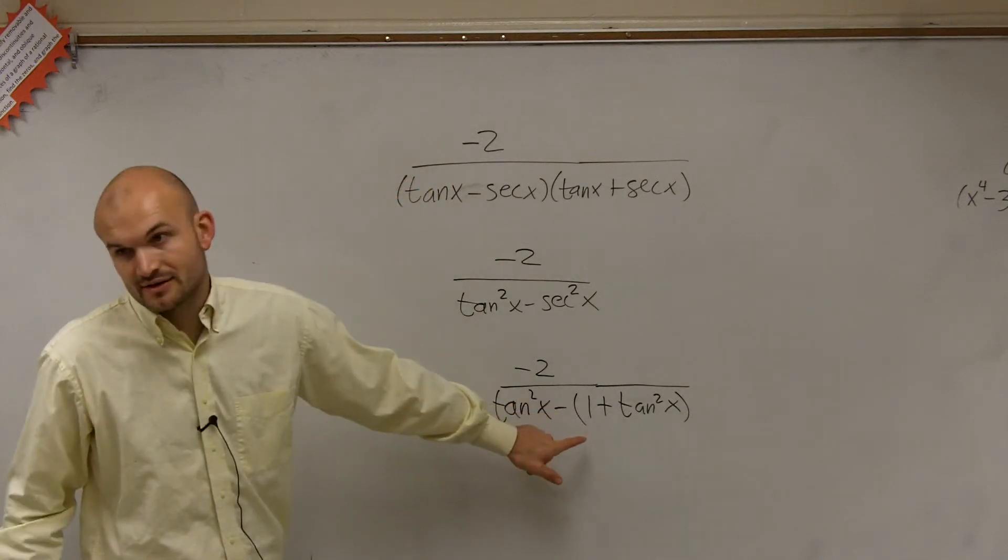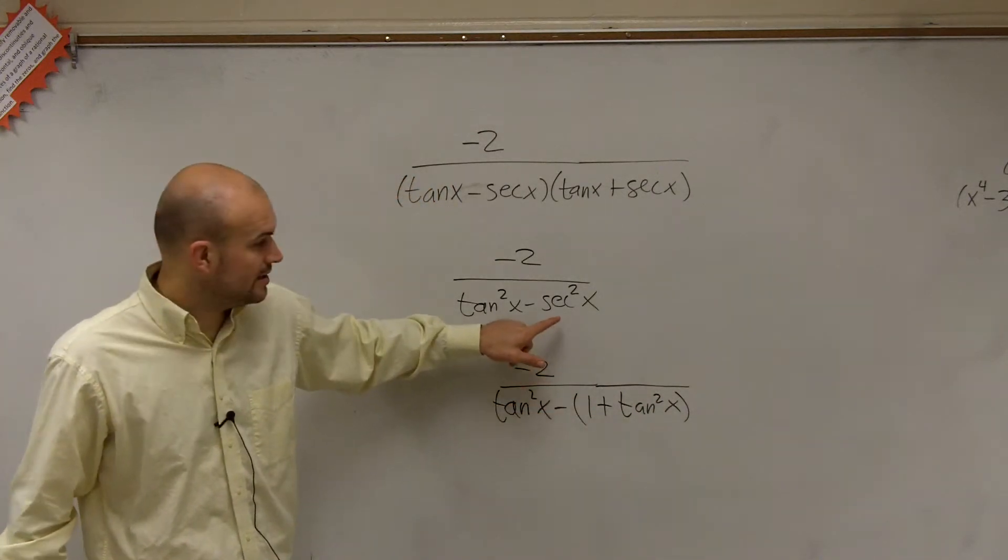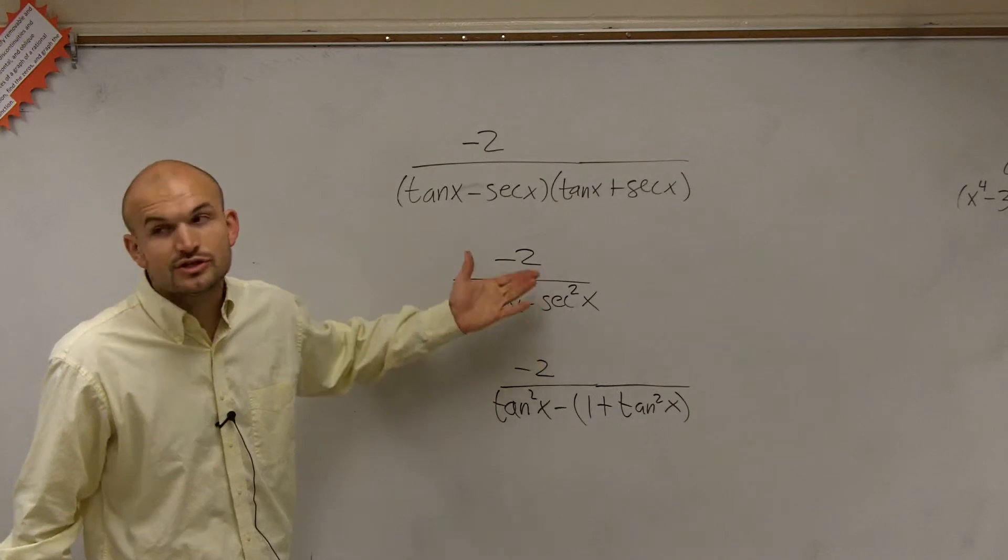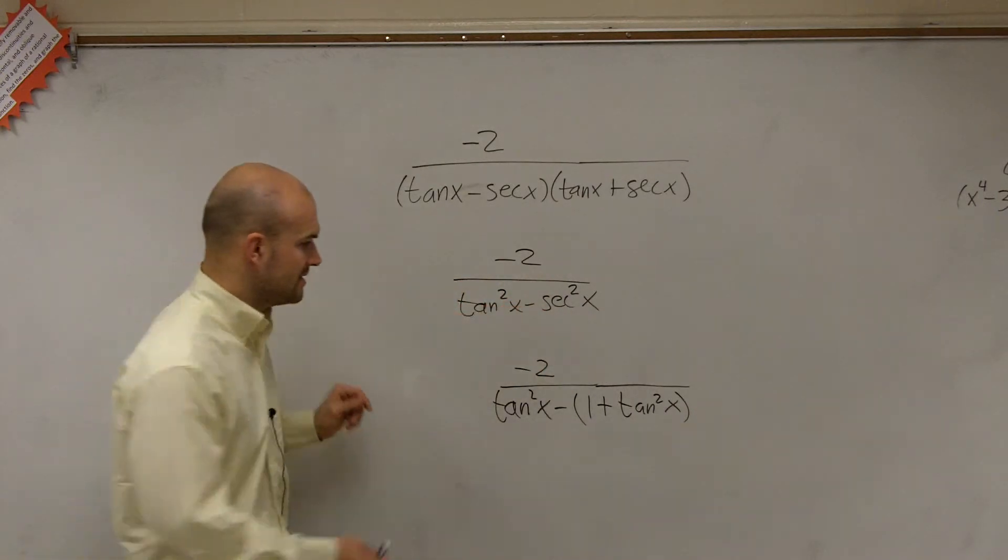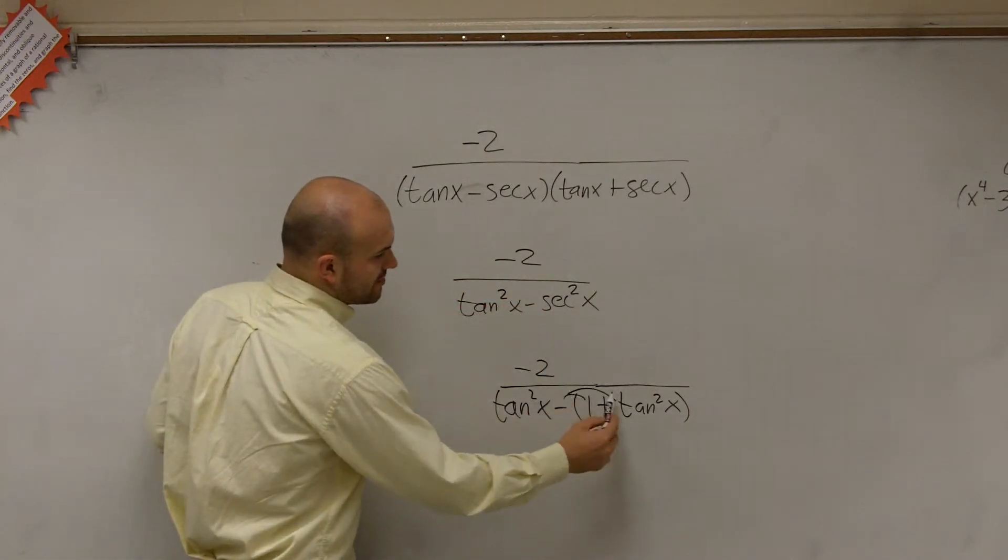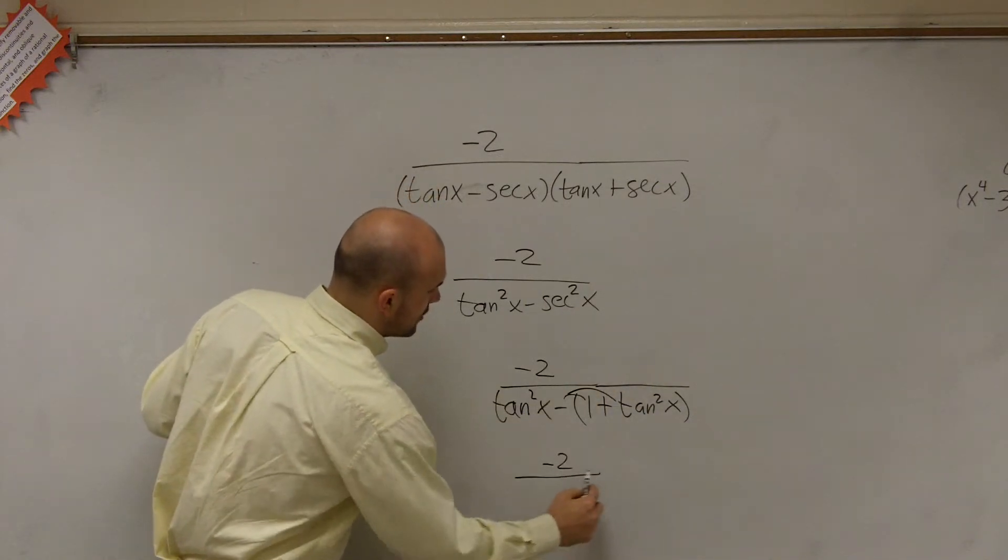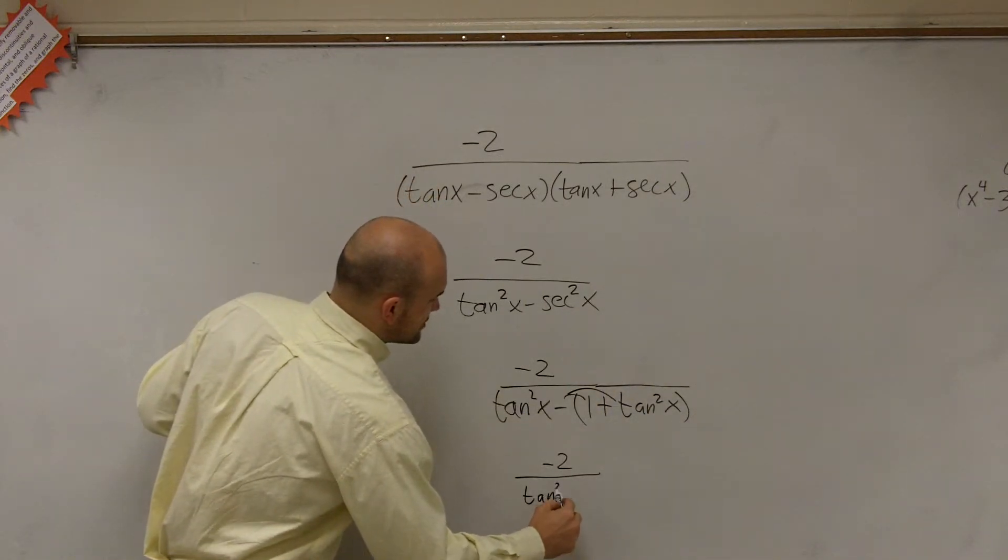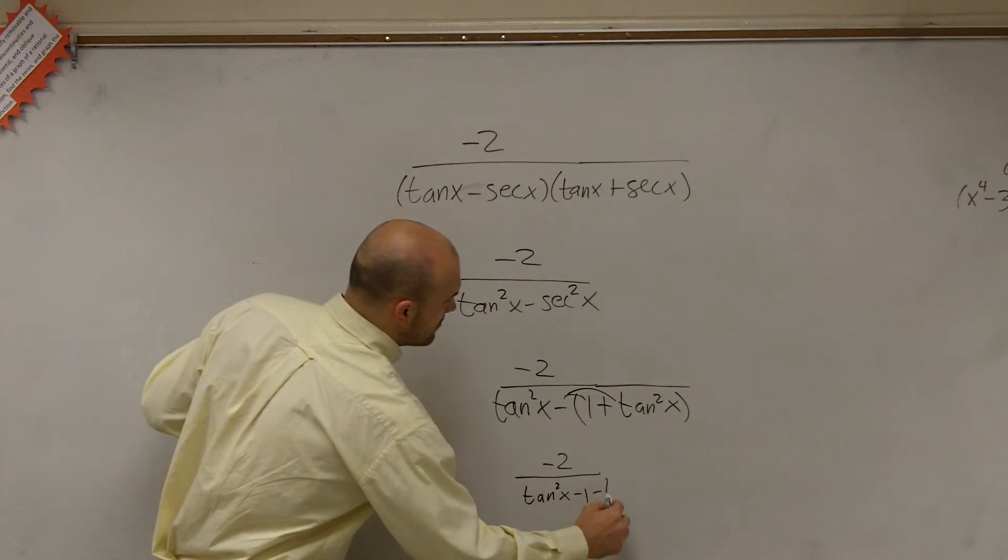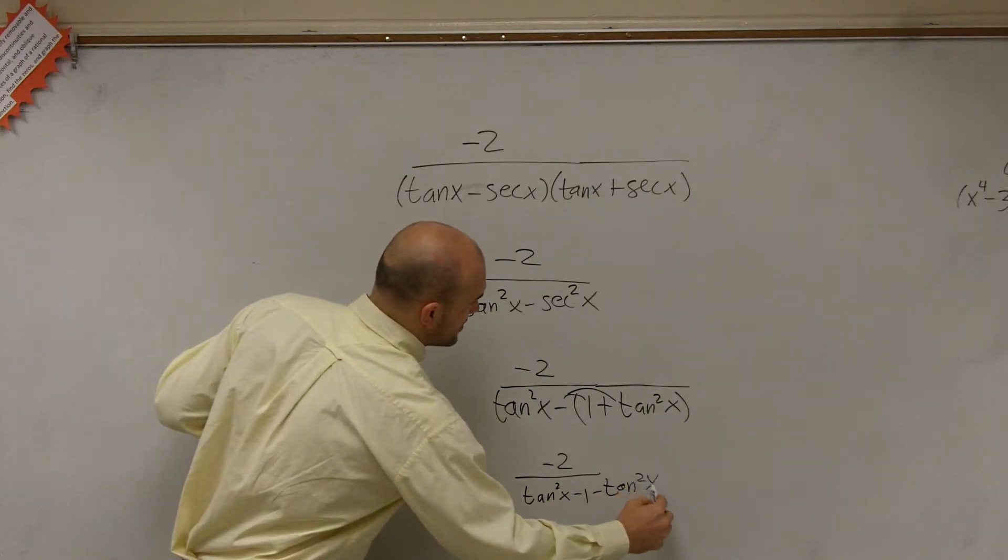Now, notice I did not distribute the negative sign. I just distributed a secant squared. You could do a negative secant squared, which would be a negative tangent. But then what you do is, you can distribute your negative sign. So therefore, now I have a negative 2 over tangent squared of x minus 1 minus tangent squared of x.